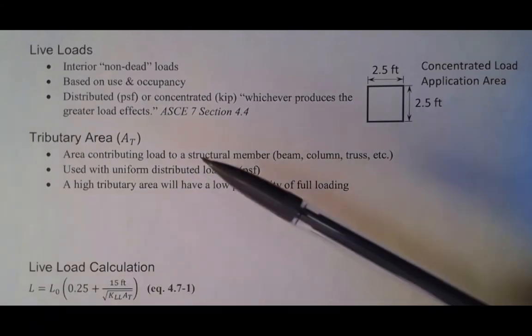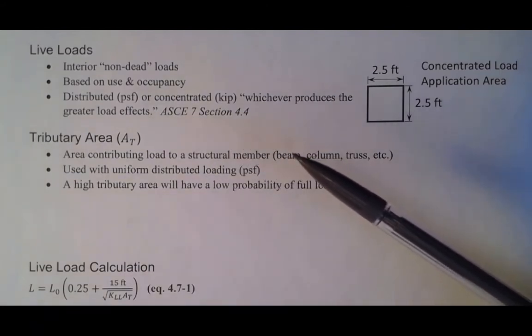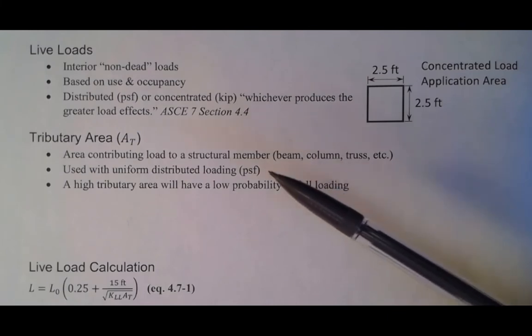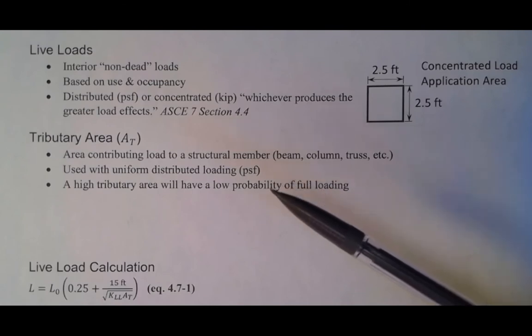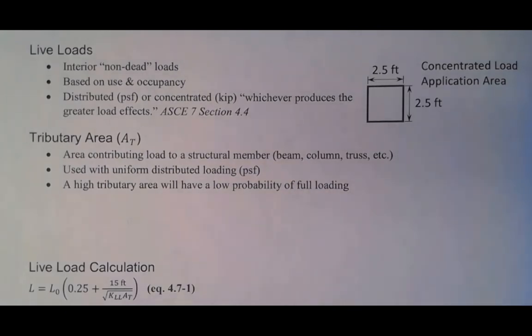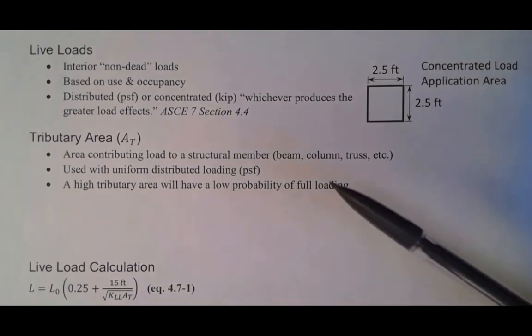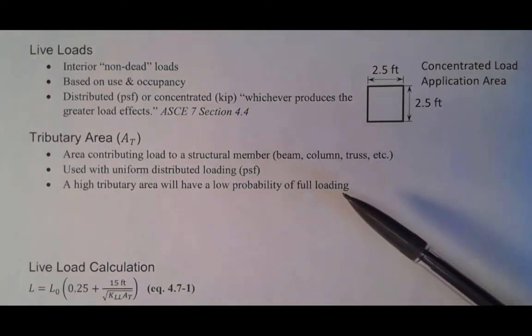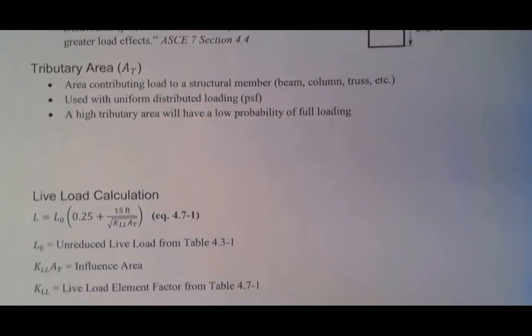We've talked about tributary area, right? It's whatever the area is that contributes to a structural member. We use that with the area load, the uniform distributed loading, and this is where it gets most pertinent to live loads is that if you have a high tributary area, you've got a lot of area that beam is supporting. It's very unlikely that the full load is going to be over that entire tributary area. And so what that allows you to do is you can actually reduce the live load when you're calculating the loading on that beam.